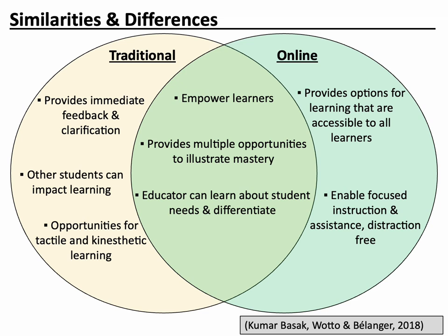Traditional learning can provide immediate feedback and clarification — a student can ask a teacher a question immediately and the teacher is able to provide that feedback in real time. Other students can have an impact on the learning, and that can be both positive or negative: positively providing a rich collaboration, whereas negatively, distractions can become problematic. And for me, as a science teacher, I try to utilize hands-on learning, laboratory work, and model building, and that's one of the strengths of traditional learning.